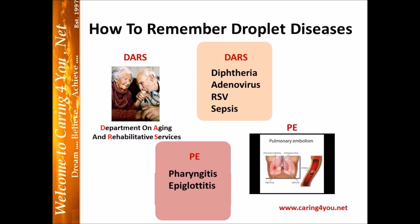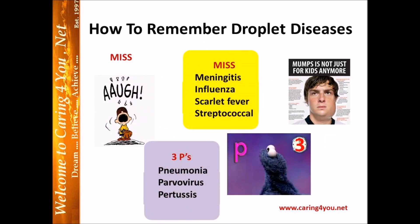Let's continue with more pictures covering the droplet diseases. Look at Charlie Brown — remember the acronym MISS: 'I missed the baseball.' When you think of MISS, think meningitis, influenza, scarlet fever, and streptococcal bacteria — any kind of streptococcal bacteria, any kind of disease: glomerulonephritis, strep throat, whatever it might be. Streptococcal bacteria is a droplet precaution.